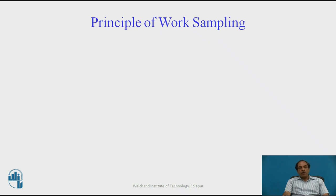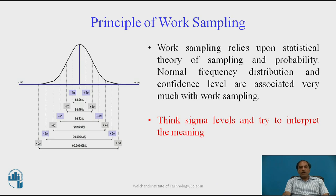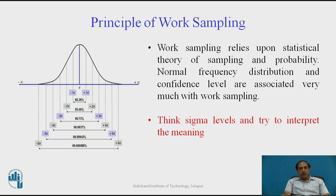Work sampling is a statistical technique based on the theory of sampling and probability. The distribution curve followed for work sampling is generally a normal distribution having a pattern of six sigma. You should think about what the various sigma levels mean and try to interpret them — what is the meaning of one sigma, two sigma, three sigma, plus-minus three, and plus-minus four sigma. Each sigma level has a particular area under the curve and represents a particular number that will be used for relevant calculations.